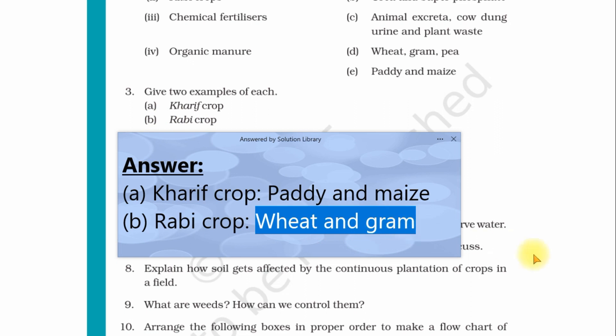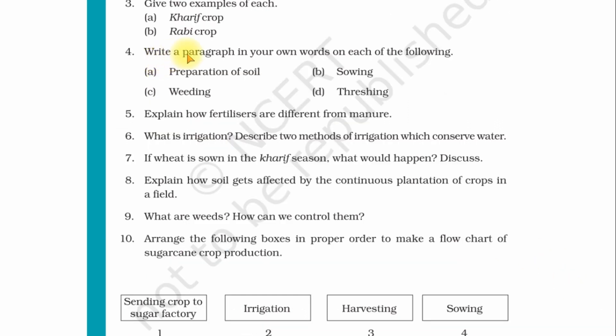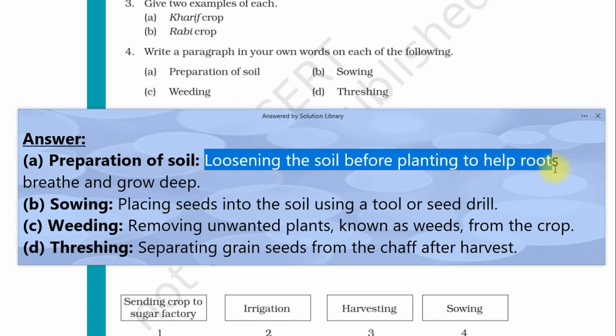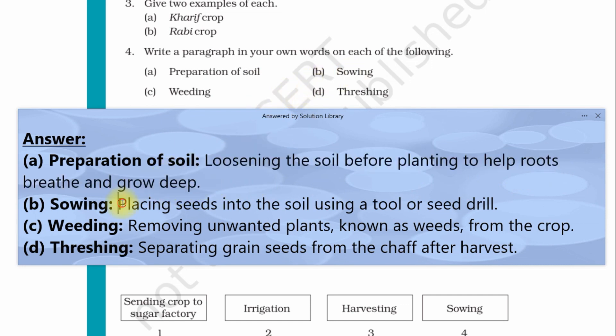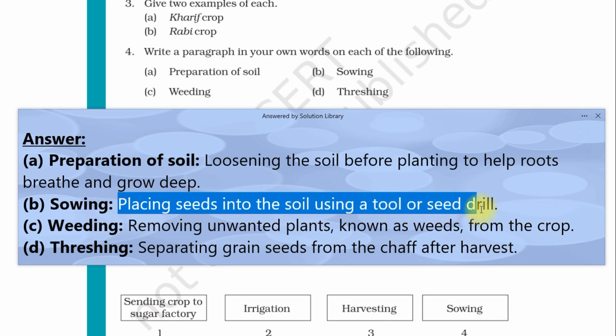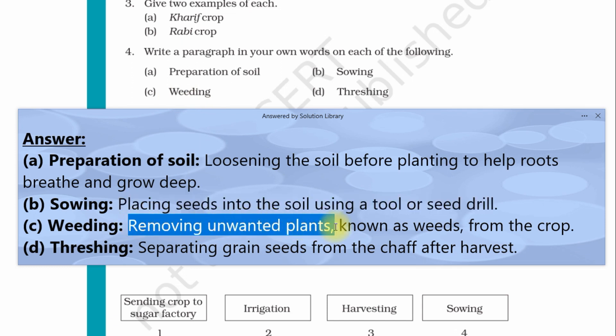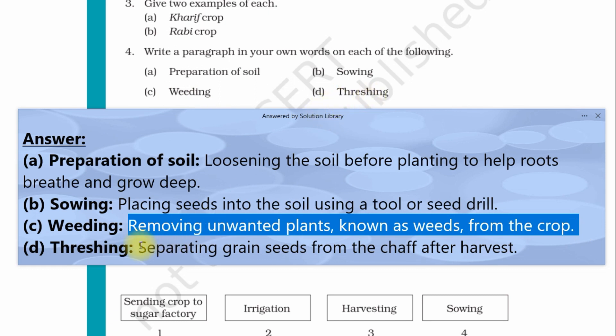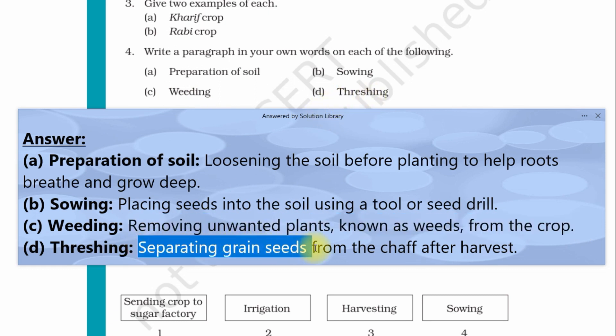Question number four: Write a paragraph in your own words on each of the following. First is preparation of soil. Answer: loosening the soil before planting to help roots breathe and grow deep. Second is sowing: placing seed into the soil using tools or seed drill. Third is weeding: removing unwanted plants known as weeds from the crop. Last is threshing: separating grain seeds from the chaff after harvest.